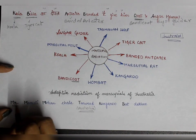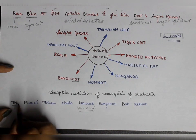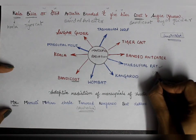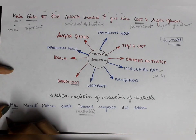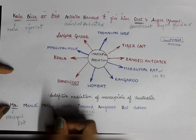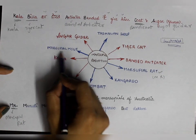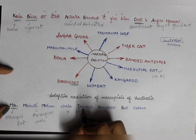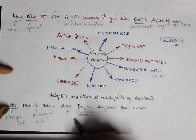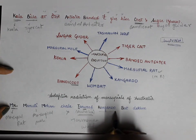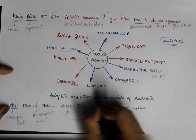So 'Mr.' represents marsupial rat — the initials M and R are the same. 'M.M.' — Maruti Mohan — represents marsupial mole. Tasmanian wolf comes from 'Chale' — though nothing direct comes from 'Chale.' 'T.W.' from Tanwood gives us Tasmanian wolf. Kangaroo gives us kangaroo. And 'bat' gives us wombat.